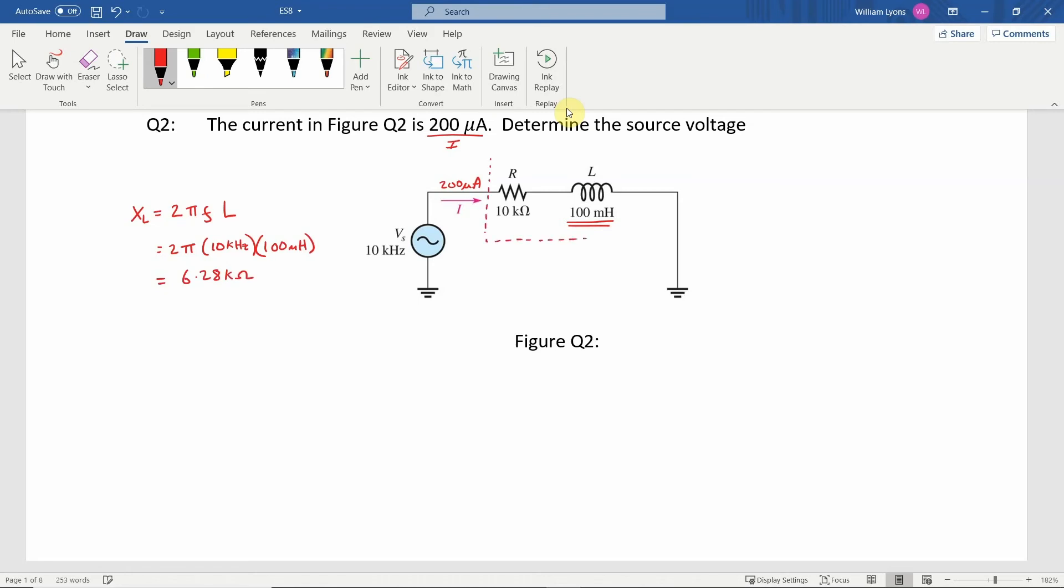So effectively, as we want to group these and find out what the impedance is, we want to find the impedance Z. Z is equal to the square root of R squared plus XL squared, which is equal to 10 kilo ohms squared plus XL, which is 6.28 kilo ohms. We get the square root of that, and that gives us a value of 11.8 kilo ohms.